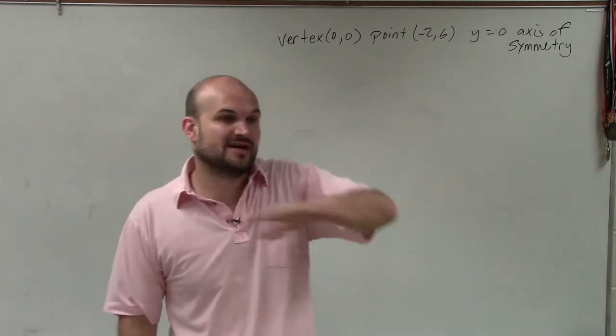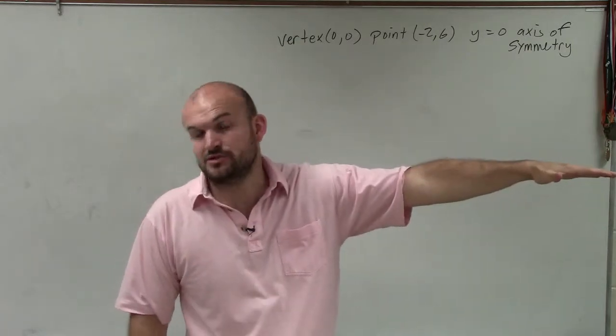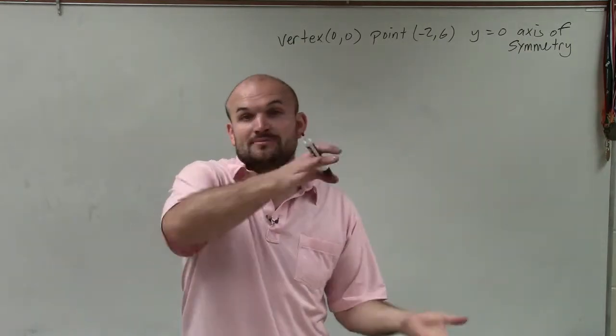So since we know y equals 0 is the axis of symmetry, I know it's going to be a horizontal axis of symmetry. Therefore, my parabola's going to either open up to the right or to the left.